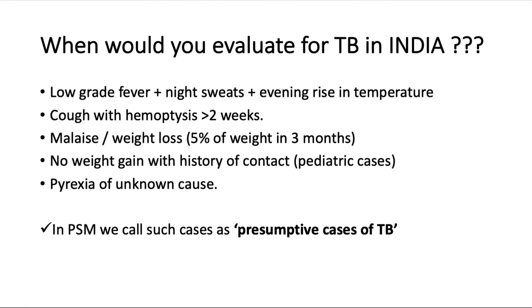When should you evaluate for TB in India? Low-grade fever, night sweats, and evening rise in temperature are indicators. Cough with hemoptysis for more than two weeks — hemoptysis meaning blood in sputum. Malaise or weight loss of 5% in 15 months is another indicator. In the OPD, if TB is suspected but symptoms are unclear, we ask the patient to monitor weight over 15-day intervals and reassess on the next visit.